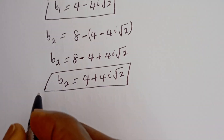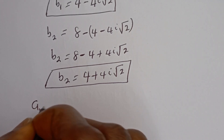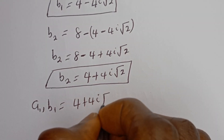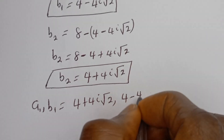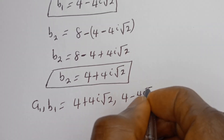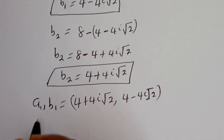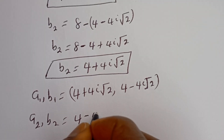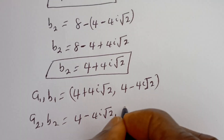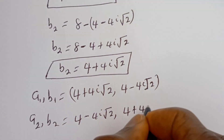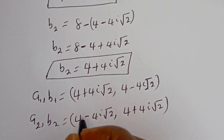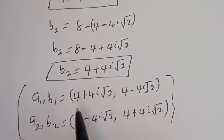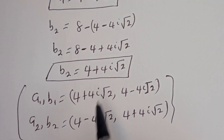Therefore our final answers are: (A1, B1) equals (4 plus 4i root 2, 4 minus 4i root 2), and (A2, B2) equals (4 minus 4i root 2, 4 plus 4i root 2). This is the final answer. I hope you enjoyed the video. Thank you for watching. Please don't forget to like, share, comment, and subscribe to my channel.